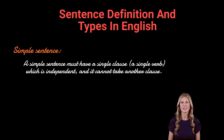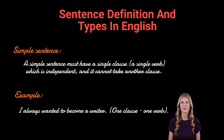A simple sentence must have a single clause with a single verb that is independent, and it cannot take another clause. Example: 'I always wanted to become a writer.' — one clause, one verb.